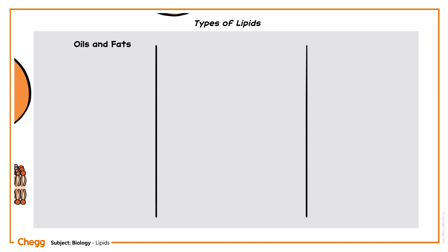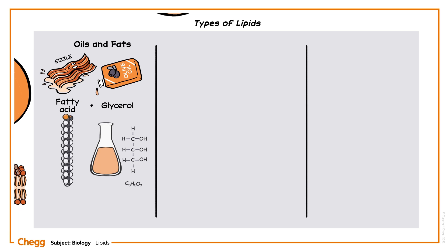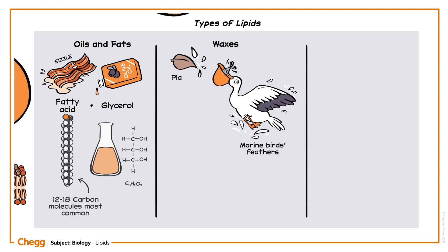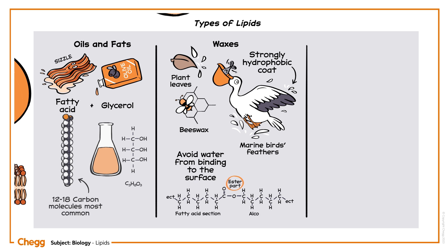A fat molecule is made up of two major elements: one or more fatty acids, and glycerol. Glycerol is a three-carbon molecule with a hydroxyl group on each carbon, thus it is an alcohol, or specifically a triol. The number of carbon atoms in the fatty acid can vary anywhere from 4 to 36, but fatty acids with 12 to 18 carbon atoms are the most common. Wax coats certain marine birds' feathers and some plant leaf surfaces. Waxes are strongly hydrophobic, so they tend to prevent water from binding to the surface of the molecules. They consist of long chains of fatty acids that are esterified into long-chain alcohols.